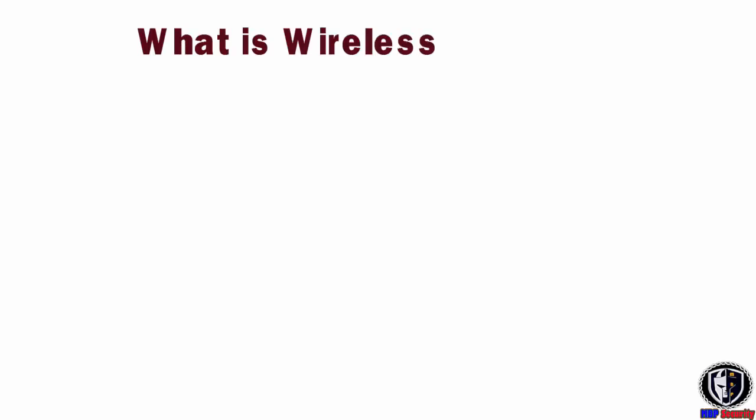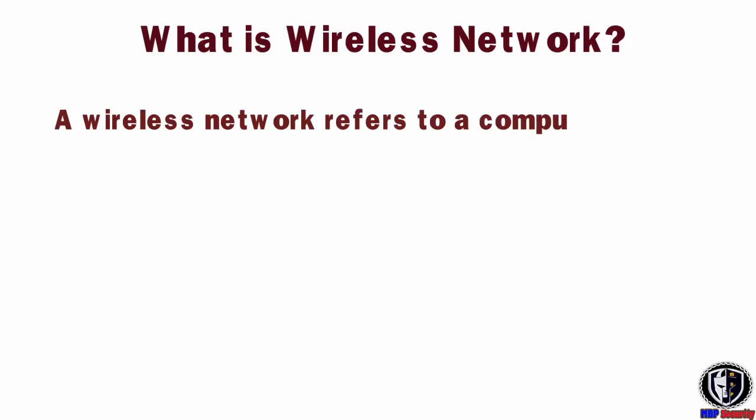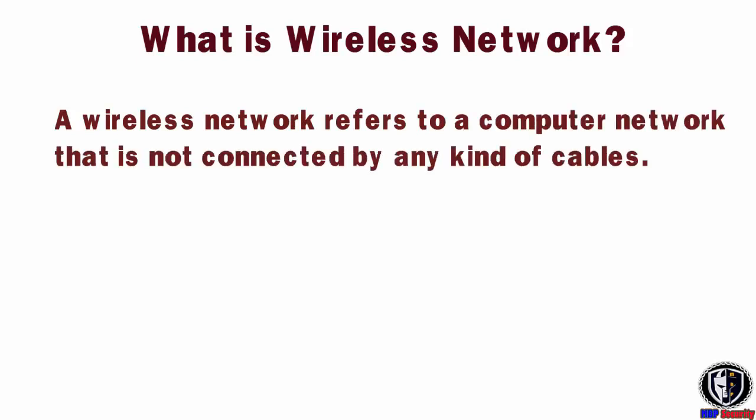First question arises: what is Wi-Fi wireless network? A wireless network refers to a computer network that is not connected by any kind of cables. In wireless networks, the transmission is made possible through the radio wave transmission system. This usually takes place at the physical layer of the network structure.